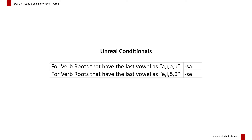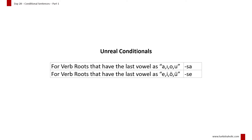First, let's look at some verbs made in the unreal conditional: Ben yapsam, sen gelsen, o bulsa, biz yesek, siz üzülseniz, onlar gezseler.